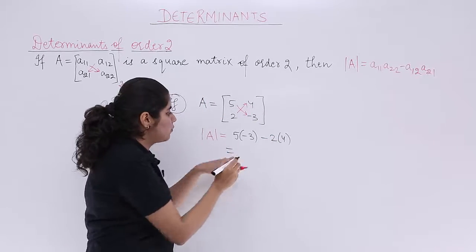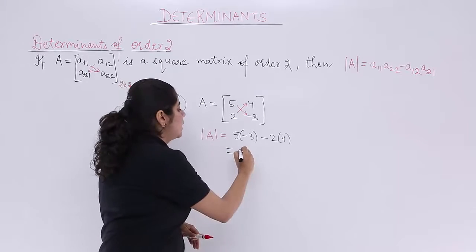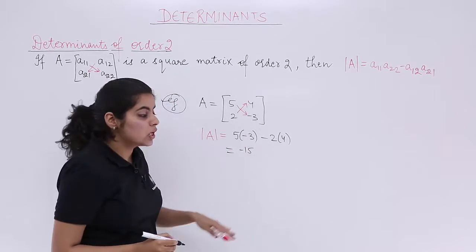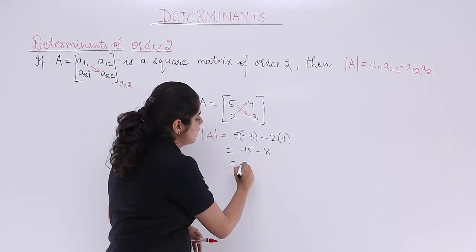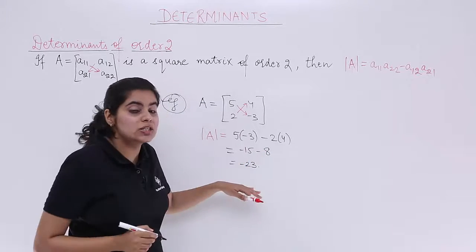Now what is the answer? 5 times 3 makes it 15. With minus sign it is minus 15. 2 times 4 makes it 8. With minus sign it is minus 8. So it becomes minus 23. And that is your answer.